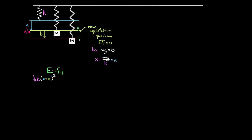That's allowed because only differences in gravitational potential energy matter, so you just have to be consistent. With H equals zero at the lowest point, the height at the initial position is zero, meaning gravitational PE equals MGH equals zero there. So the total initial energy is just the spring potential energy: one half K times (A plus B) squared.